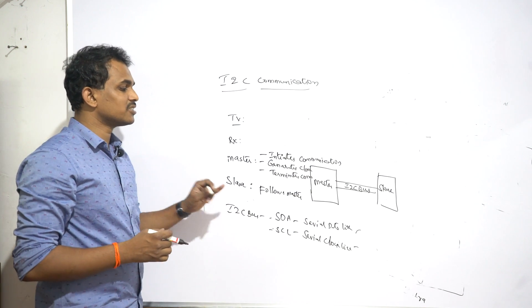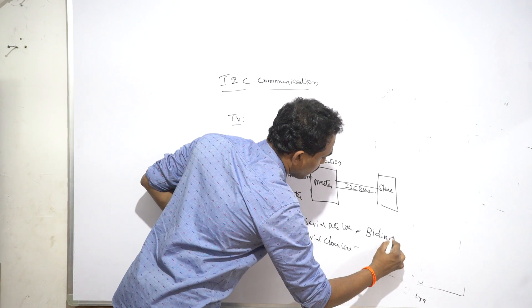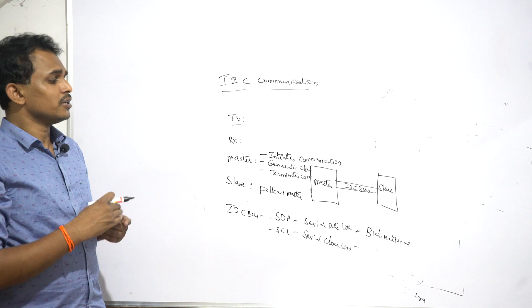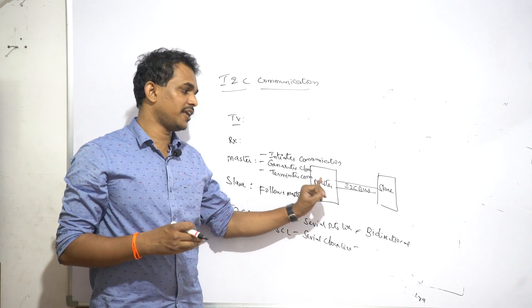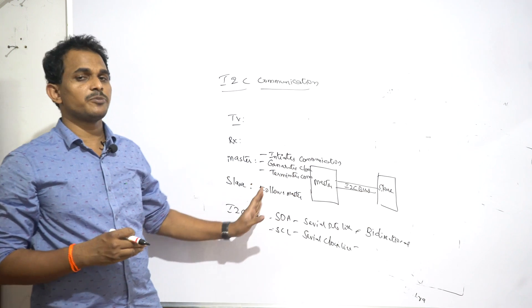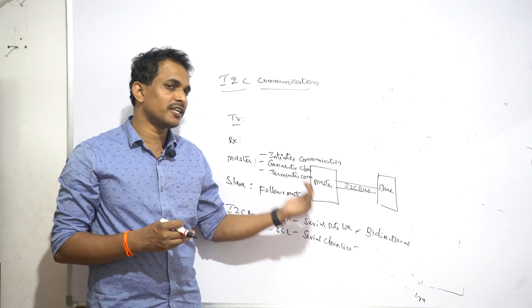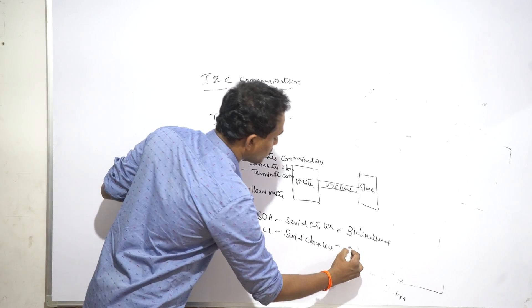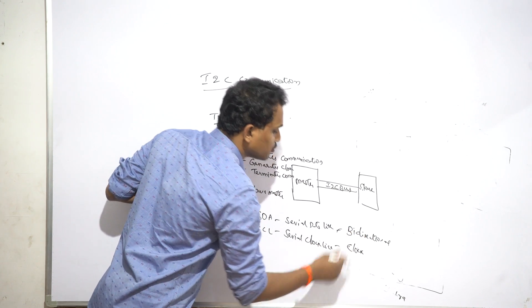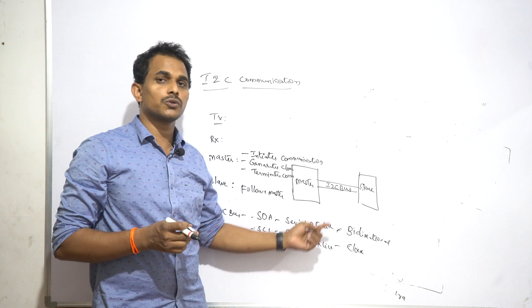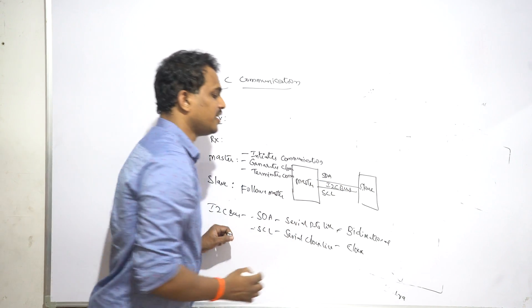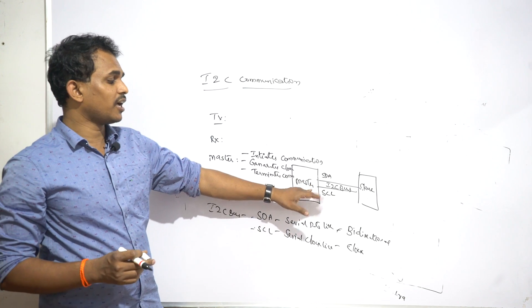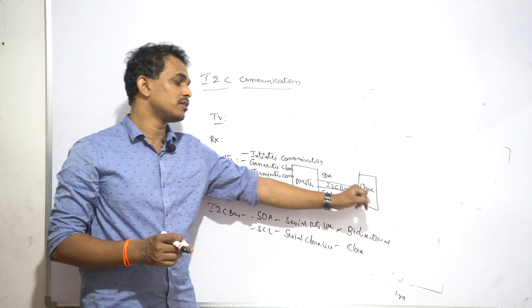The Serial Data Line is bidirectional, meaning this line sends data from master to slave and also receives data from slave to master. There is only one line for sharing data between master and slave. You transmit data from master to slave through the SDA line, and you also receive data from slave to master through the SDA line. The SCL line handles the clock, passing it from master to slave to keep synchronization.